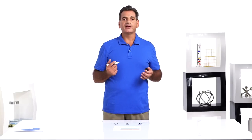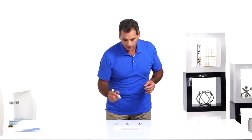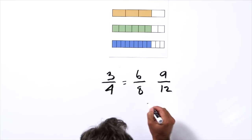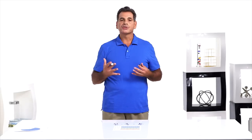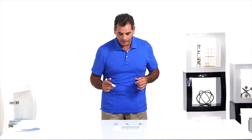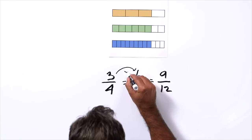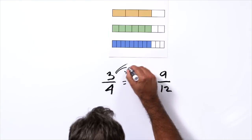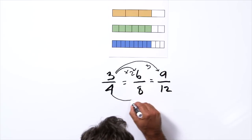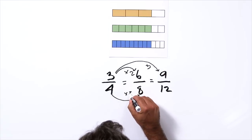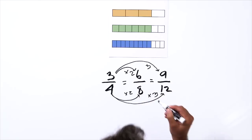Ask students if they see any relationship between the numerators and the denominators of the different fractions. Three-quarters equals six-eighths equals nine-twelfths. We'll draw arrows to show the multiples if the students don't bring them up: three times two, three times three, four times two, four times three.